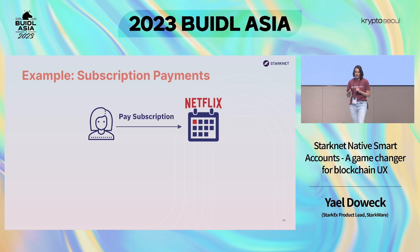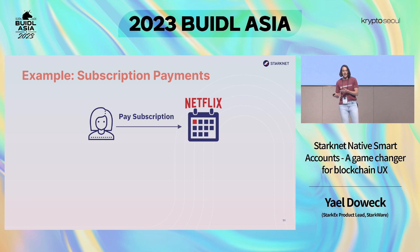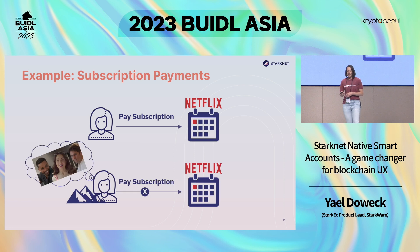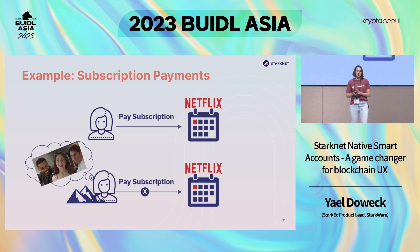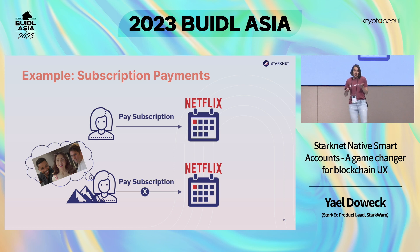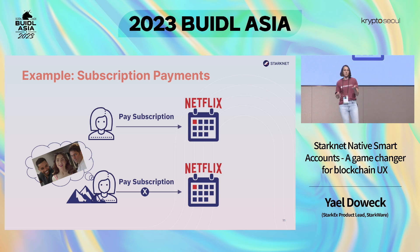Another limitation is subscription payments. Let's say Alice has an account and a subscription to Netflix, paying each month. But Alice is going to the mountains — she wants to travel and doesn't have internet connection, so she can't pay her Netflix subscription. She really wants to get home and binge her favorite TV show, Emily in Paris. Since she doesn't have an internet connection, she can't pay, Netflix cancels her subscription, and when she gets back home she won't be able to see the show. That's unfortunate for Alice.